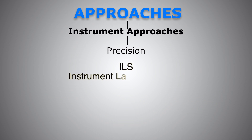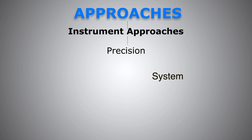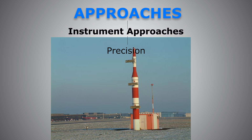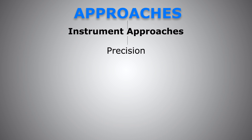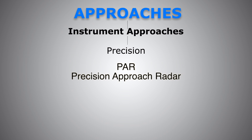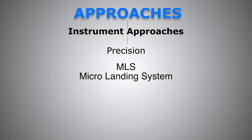Examples: the ILS, Instrument Landing System, provides both lateral and vertical guidance — the lateral guidance from the localizer, which is at the far end of the active runway, and the vertical guidance from the glide slope, which is normally about 300 meters down the threshold and slightly to the left or right of the runway. Then we have GLS, or GBAS Landing System — Ground-Based Augmentation Landing System — which is based on a GNSS and an SBAS. We also have PAR, Precision Approach Radar, usually used by the military but sometimes civilian aircraft can request it. And the MLS, Microwave Landing System — it's not that common nowadays, but it's considered a precision approach.